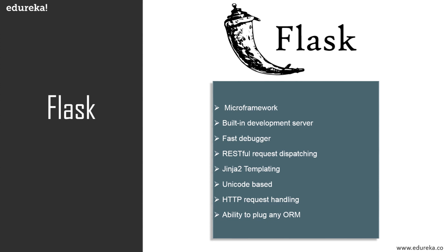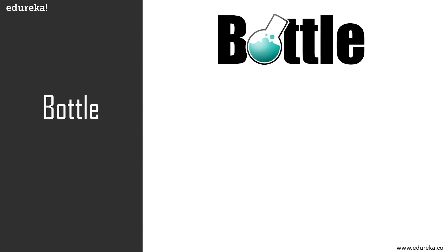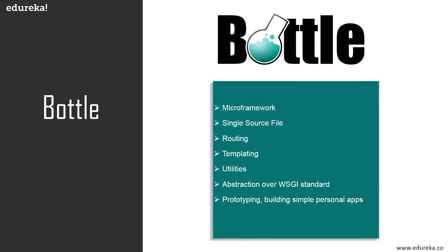Now let's move on to the Bottle framework. Bottle is also a micro framework, originally meant for building APIs. It implements everything in a single source file and has no dependencies apart from the Python standard library. Its default features include routing, templating, utilities, and a basic abstraction over the WSGI standard. Bottle is a perfect solution for prototyping, learning web frameworks, and building simple personal apps.